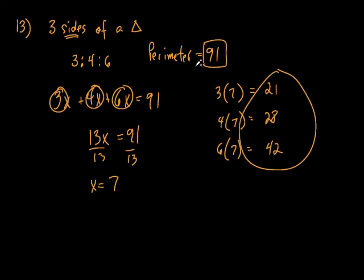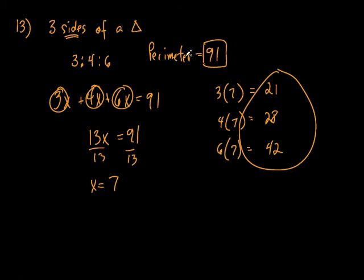The question asked for the longest side, so obviously the longest one is 42. For the angles version — we did it in third period — it's really no different except they don't give you a perimeter. You just set the ratio times x times x times x equal to 180, add them up, solve for x, and plug back in.